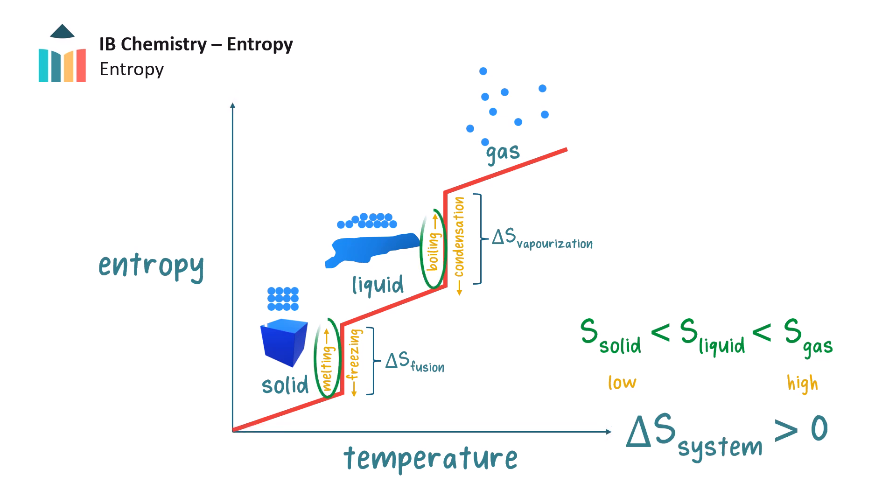Heating processes increase system entropy, and so the change in entropy or delta S for the system is positive. Cooling processes decrease system entropy, and delta S for the system is negative.